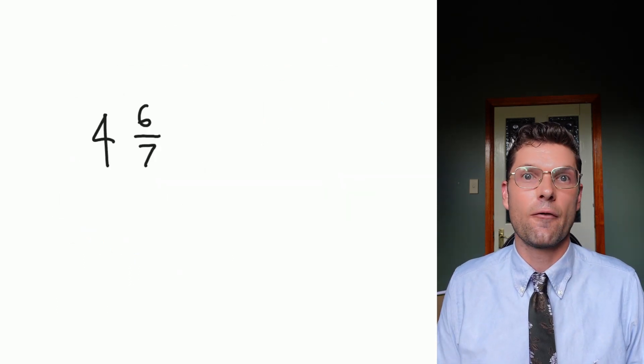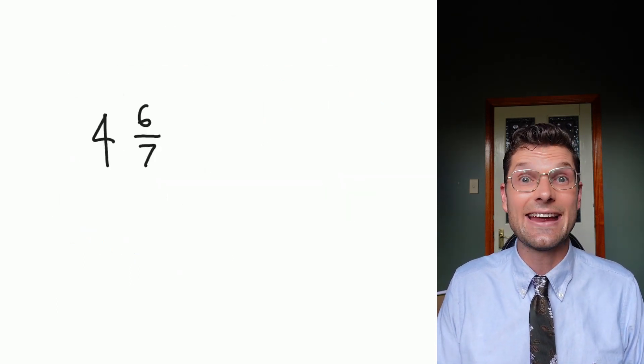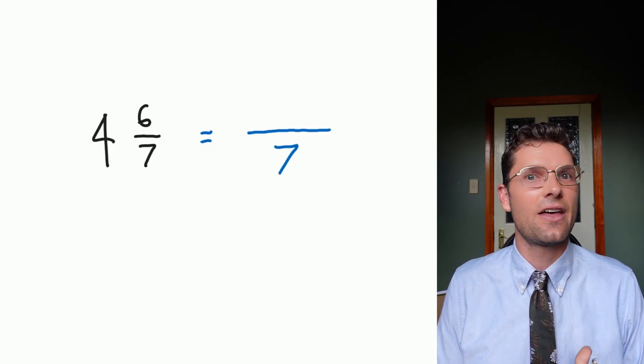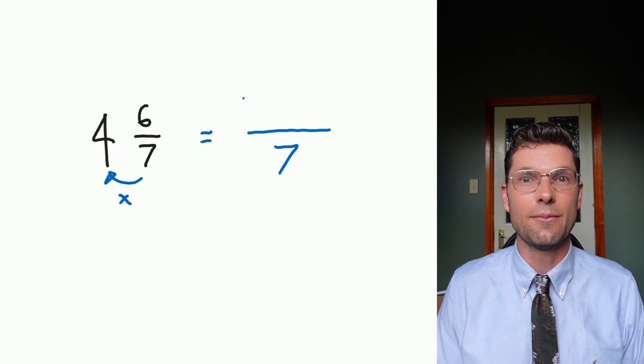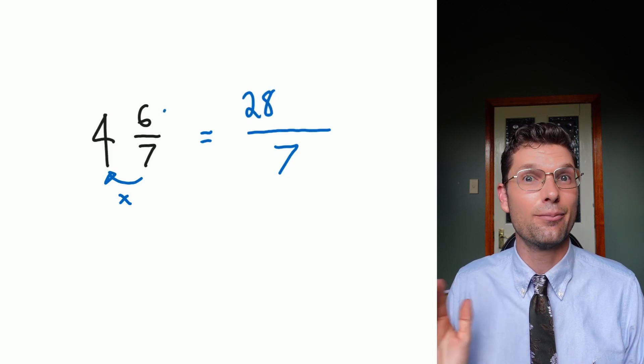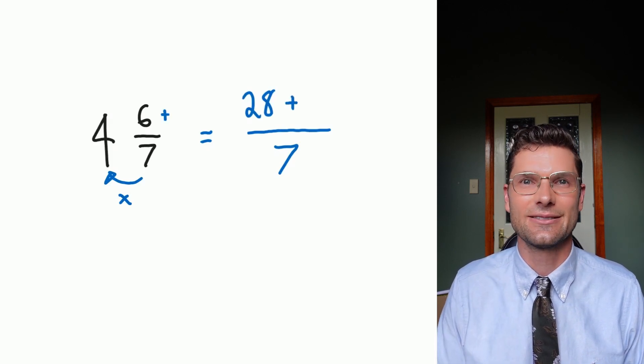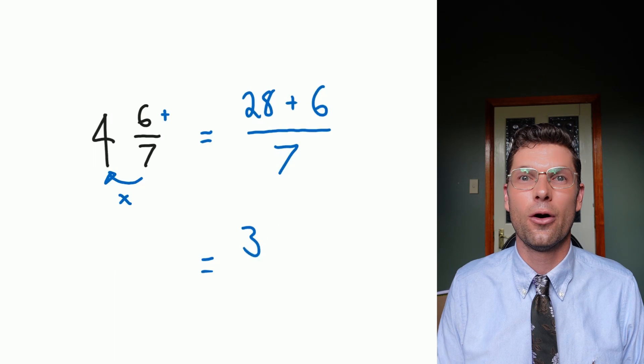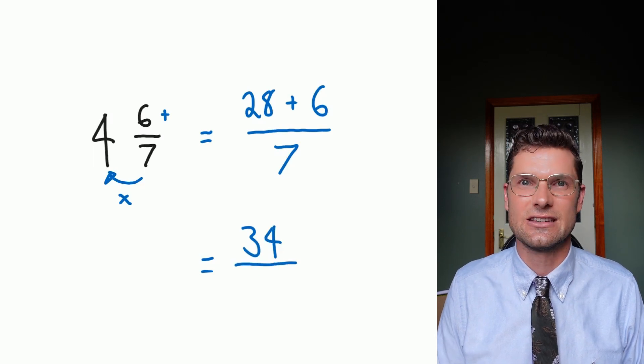For this last example, I've got four, six over seven. So my answer is definitely gonna be over seven. That's my first step. Then I've got to multiply the bottom by the whole number, which is equal to 28. And then plus the six at the start. 28 plus six is 34. My final answer is 34 over seven.